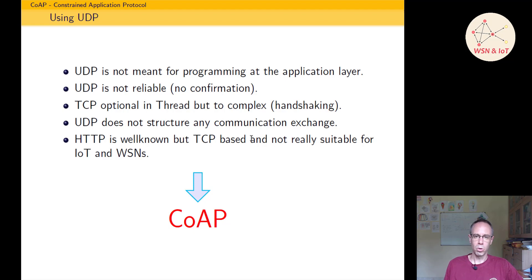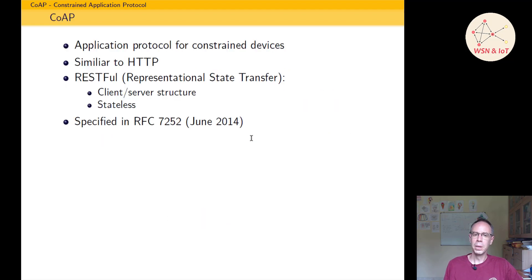So the solution for this is CoAP protocol. CoAP is an application protocol for constrained devices. It's similar to HTTP, it follows also the RESTful approach, so this means we're having also this client-server structure and a stateless connection. So we don't store any status from the connection in a state machine or something like this—information are always in the package itself. It's specified in RFC 7252 and has been out since June 2014.